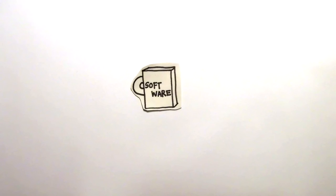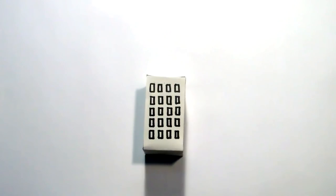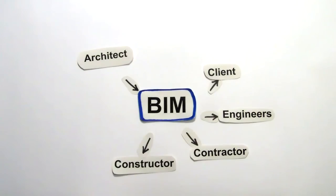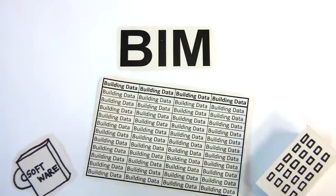Some say BIM is a type of software. Some say BIM is the 3D model of buildings. Others say BIM is a process or that BIM is nothing more than an organized collection of all building data. BIM is all of the above and more.